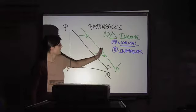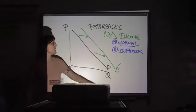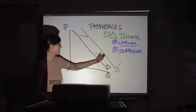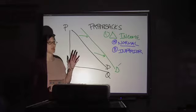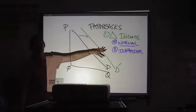Normal, you have more money, you consume more. Demand slides to the right. Inferior, you have more money, you consume less. Demand slides to the left. And again, it depends on the individual consumer which category particular goods fall into.